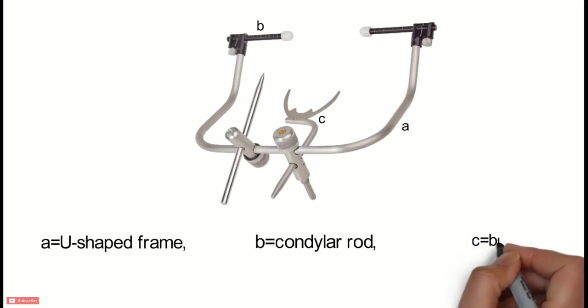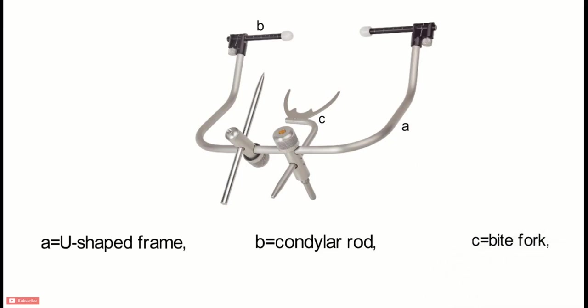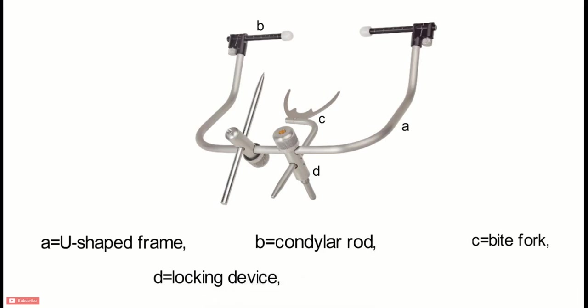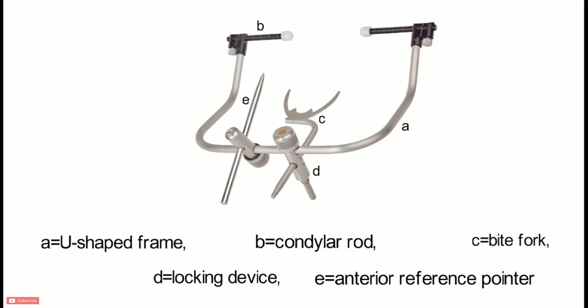The next part is the bite fork. It is a U-shaped rod which is attached to the maxillary occlusal rim while recording the orientation jaw relation. It is attached to the frame with the help of a metal rod called the stem. Sometimes the bite fork is attached to the occlusal surface of the occlusal rim with the help of impression compound, done in order to preserve the occlusal rim. The next part is the locking device, which mainly helps to attach the U-shaped frame to other parts like the bite fork and the orbital pointer. The next part is the orbital pointer pin. It helps in marking the anterior reference point. It is adjusted after marking the anterior reference point on the patient, enabling the transfer of the third reference point.